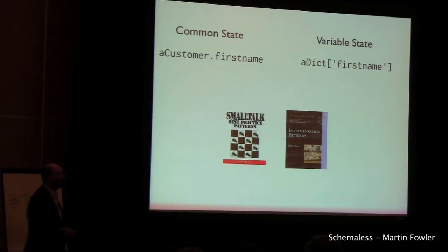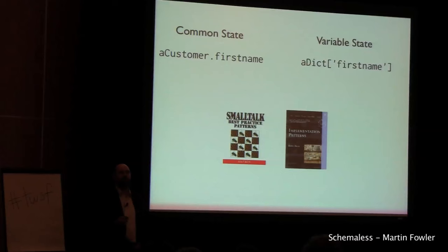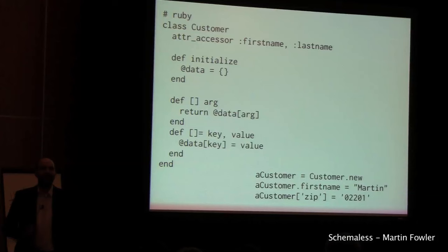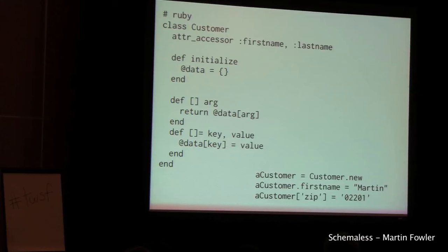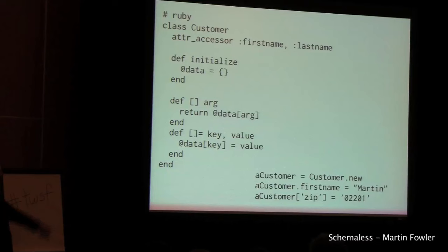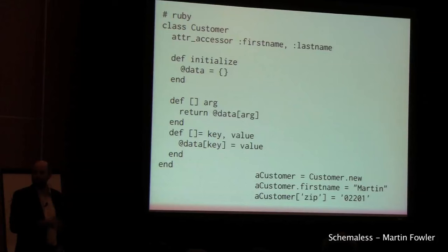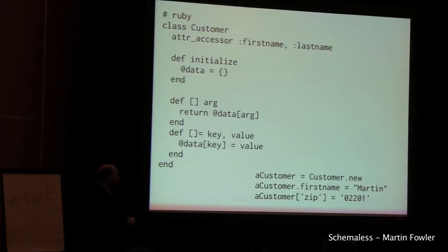Before I talk about those advantages, I want to bring out the point that you don't have to choose between one or the other. It's perfectly reasonable to use both common state and variable state — to use schema and schemalessness in the same class. So in Ruby, for example, I can define some fixed pieces of common state and at the same time provide a dictionary for variable state. I can use the common state where I want the more explicit schema, and use the variable state for cases where I want variation. It's not an either-or choice; you can combine both.